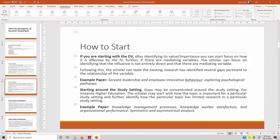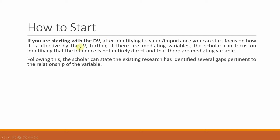If you are starting with your dependent variable, after identifying its value and importance, you can focus on how it is affected by the independent variable. If there are mediating variables, when starting with your dependent variable and once you have identified its value, the next step is how it is affected by the independent variable — and then the same story again. If there are mediating variables, the scholar can identify that the influence is not entirely direct and that there are mediating variables, followed by stating that there are several gaps pertinent to the relationship between the variables.